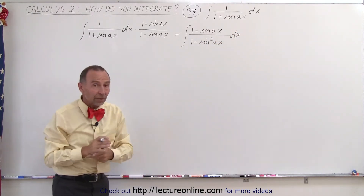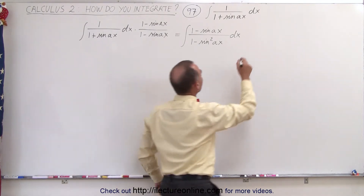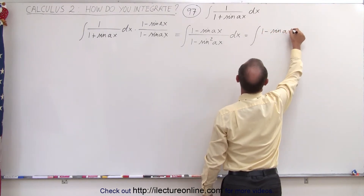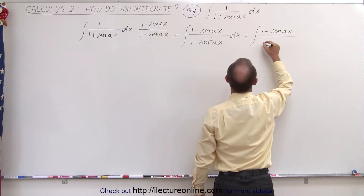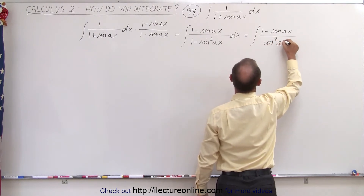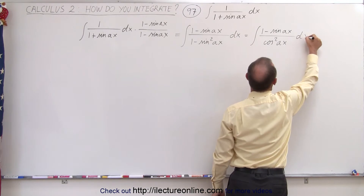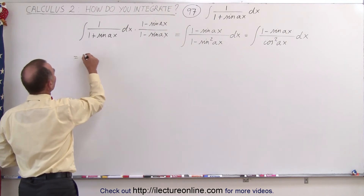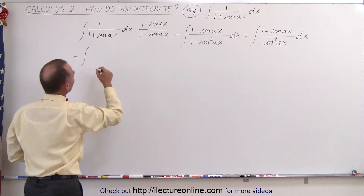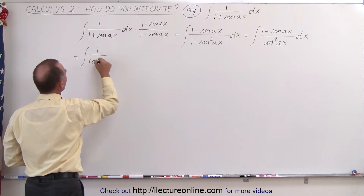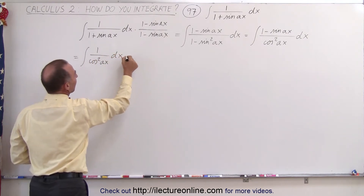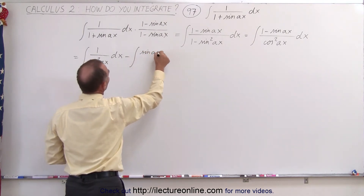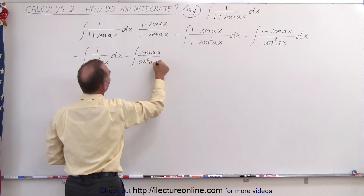In the denominator, notice we can change that to cosine squared of Ax, using the Pythagorean identity. So this becomes the integral of 1 minus the sine of Ax divided by cosine squared of Ax dx. We can then write it as two separate integrals: the integral of 1 over cosine squared of Ax dx, minus the integral of sine of Ax divided by cosine squared of Ax dx.